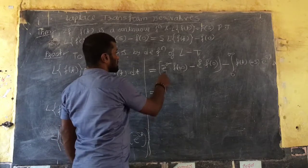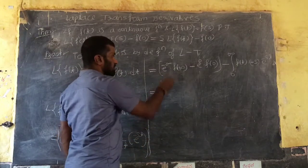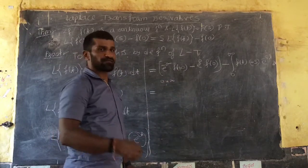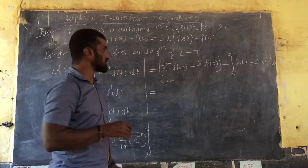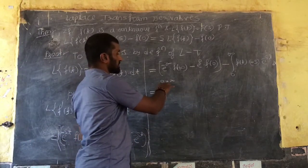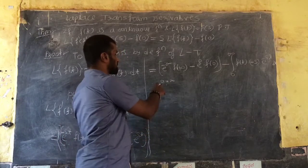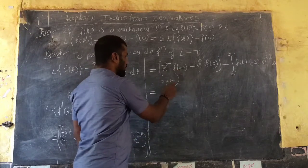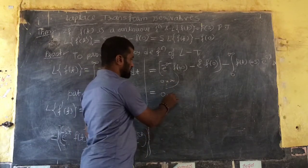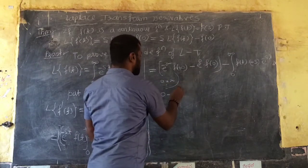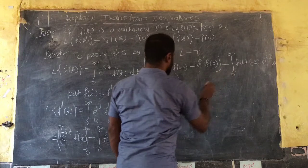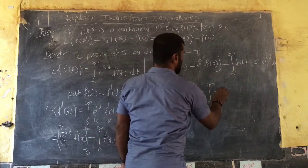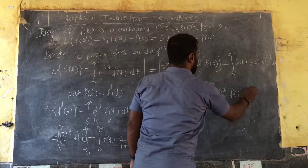Now, e^{-∞} is 0, so the term e^{-∞}·f(∞) is in the form 0·∞ — an indeterminate form. Taking the limit as n tends to infinity, this can be reduced to either 0/0 or ∞/∞ form, and the whole value goes to 0. Then e^0 is 1, so we keep f(0) as it is. Minus times minus gives plus, so we have s times the integral from 0 to infinity of e^{-st}·f(t) dt.